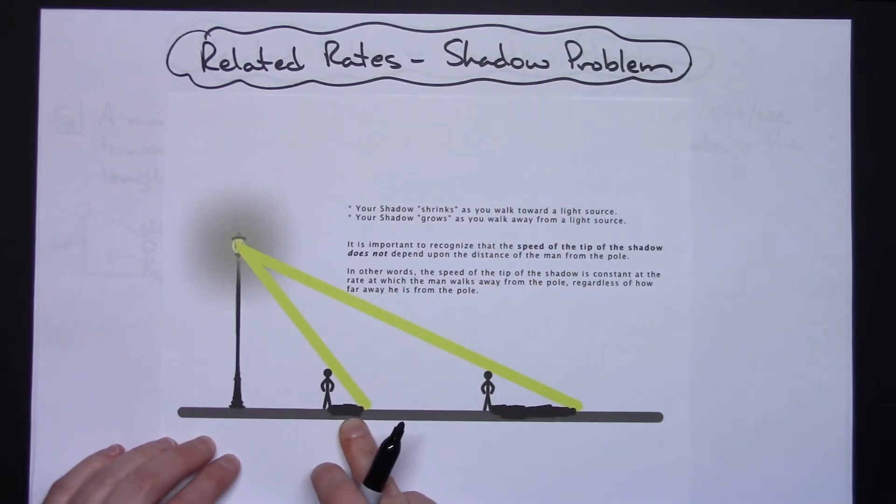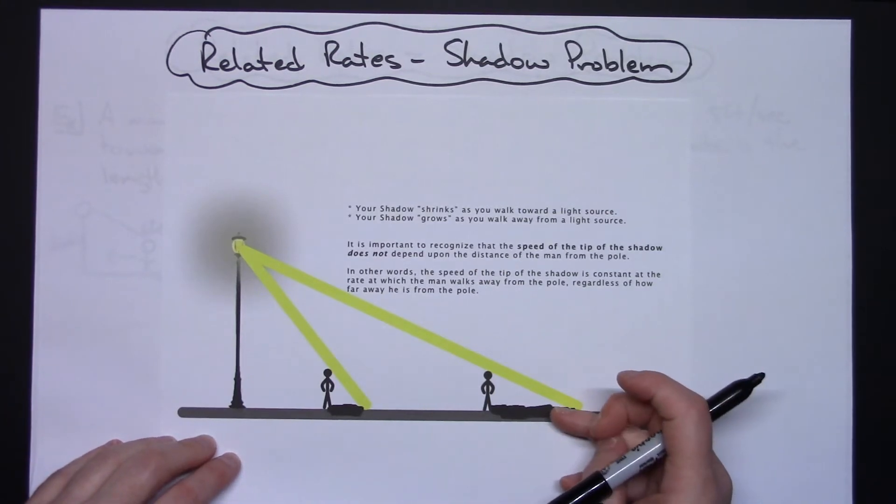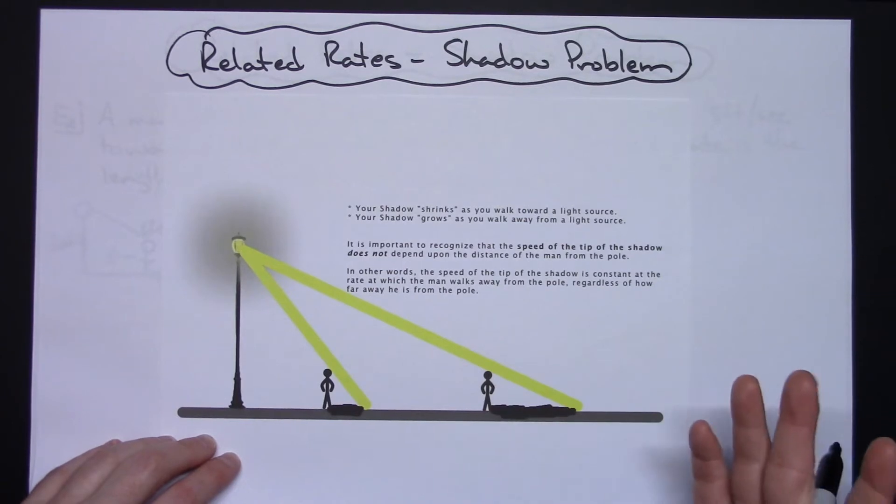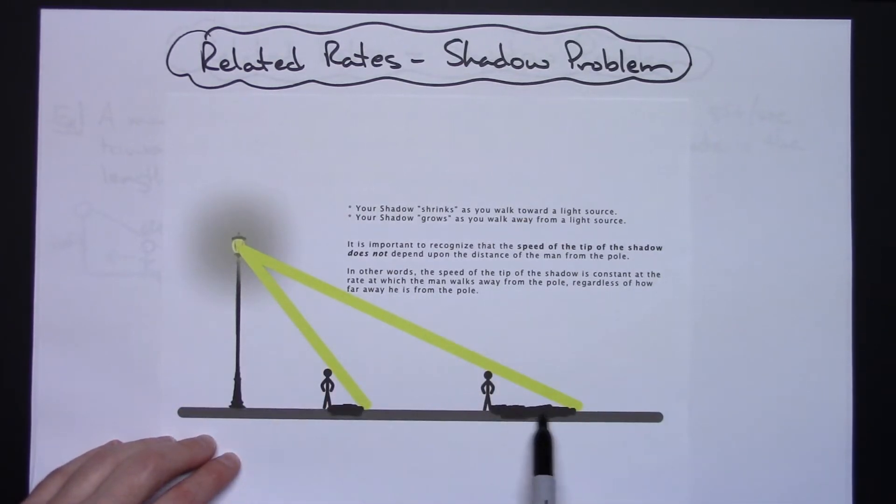As you walk closer, the same height person has the beam coming down and it's going to be a shorter shadow there. So your shadow does shrink as you walk toward a light source. The shadow grows as you walk away from the light source. Generally what I do is I have my students set it up anytime we have a light pole problem.